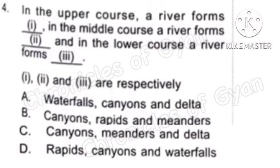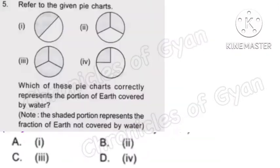Question 4: In the upper course a river forms 1, in the middle course a river forms 2, and in the lower course a river forms 3. 1, 2 and 3 are respectively — the correct answer is Option C: Canyons, Meanders and Delta.